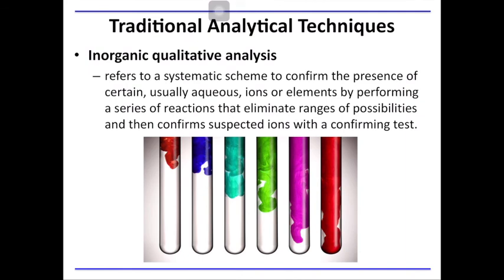Finally, the last example of a traditional analytical technique is inorganic qualitative analysis. Take note that the previous techniques discussed are quantitative analysis, meaning they aim to measure the amount of analyte in your sample. Inorganic qualitative analysis only seeks to confirm the presence of specific analytes — typically elements or ions — in your sample. For instance, if your water sample contains iron ions, the addition of a certain reagent that changes the color of the solution to red in the presence of iron ions confirms their presence. If no change in color, then there might be no iron ions in your unknown water sample.